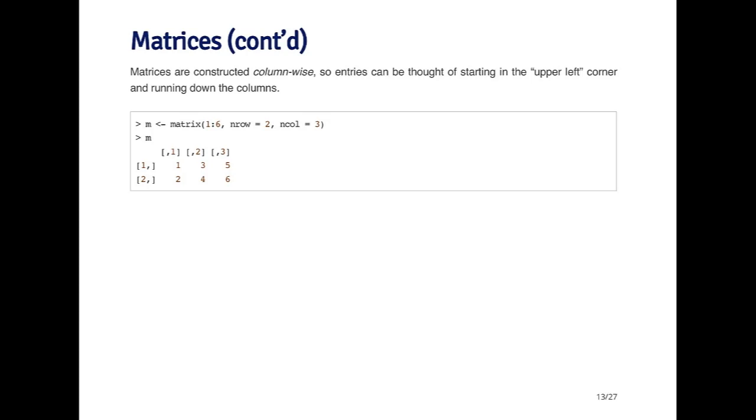and there's only two rows, so it can only go to two, and that makes the first column. The second column is made up of three, four, and the third column is made up of five and six.